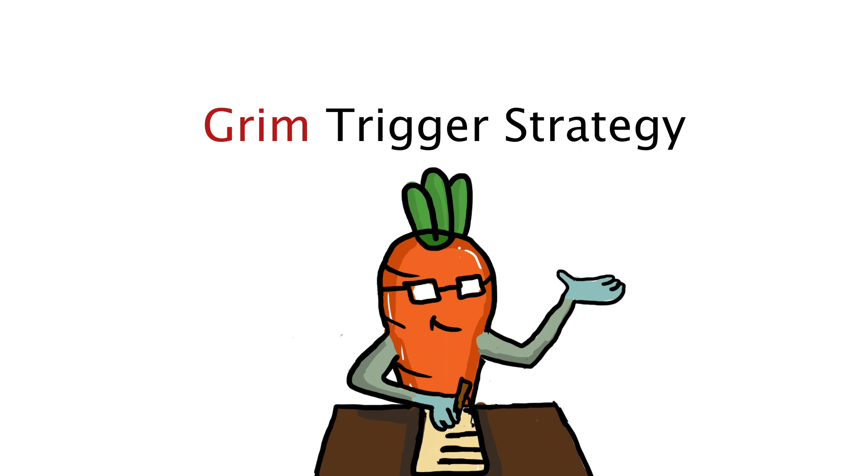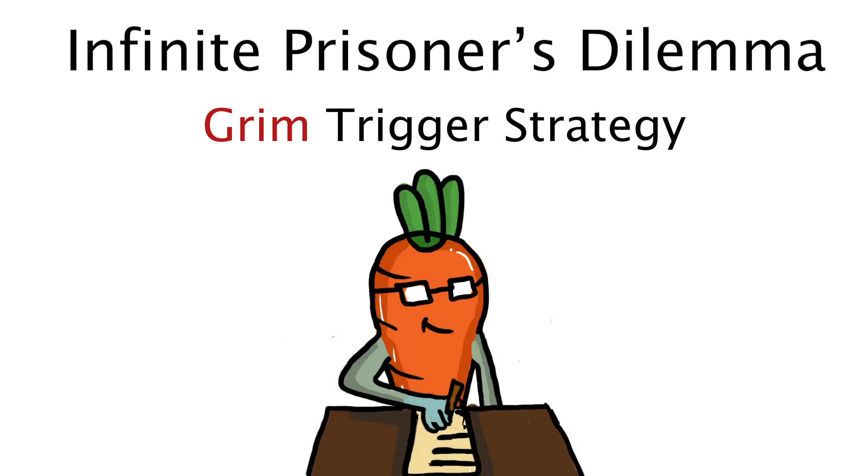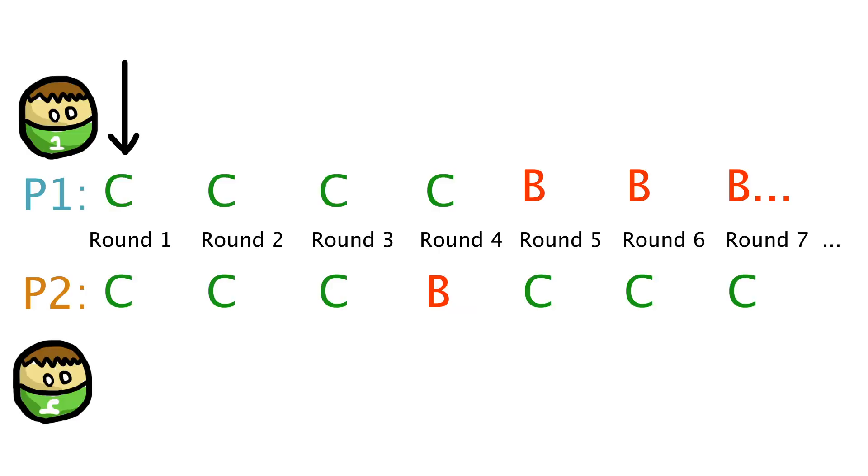Let's apply this formula to the grim trigger strategy, which is one of the possible solutions to the infinitely repeated prisoner's dilemma. As the name suggests, the idea behind this strategy is to cooperate until the opponent betrays you, and the moment that happens, you betray them forever. Although this seems harsh, the idea of betraying the opponent forever if they betray you acts as a deterrent which forces cooperation.